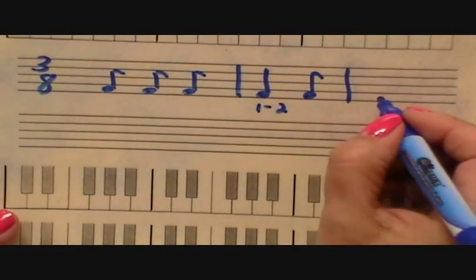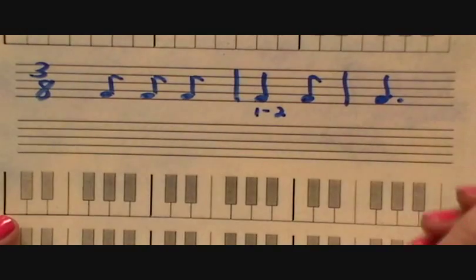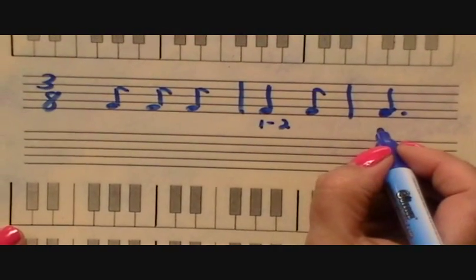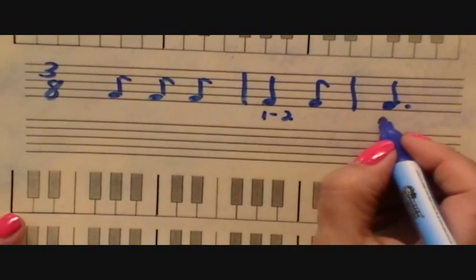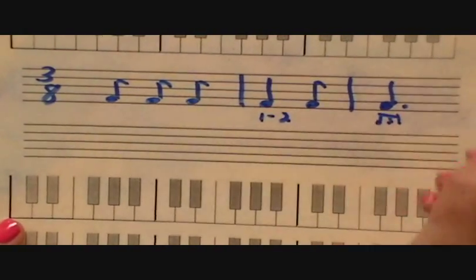Okay. It could be just a dot like that. Because how many eighths are in that quarter? There's two eighths plus the dot is half the value. So there's your three eighths. So that's all by himself.